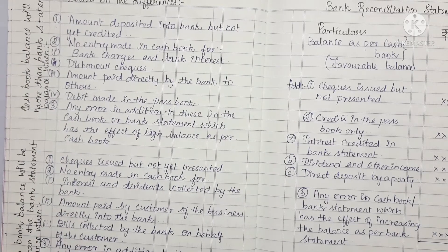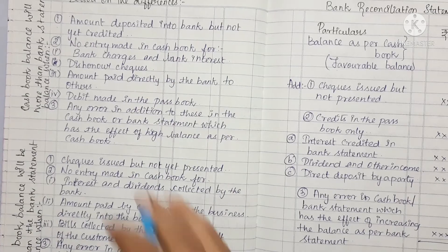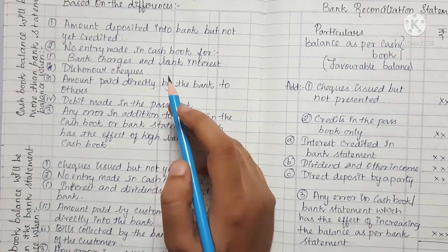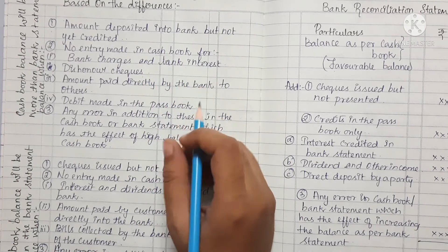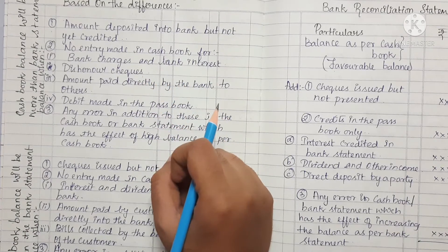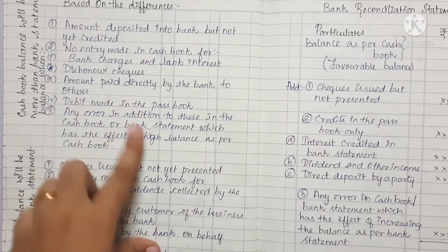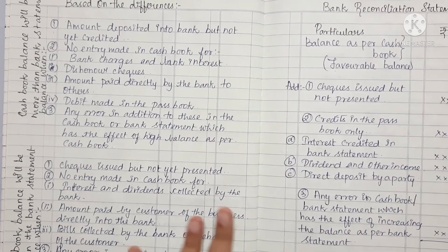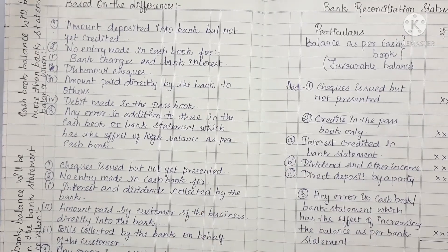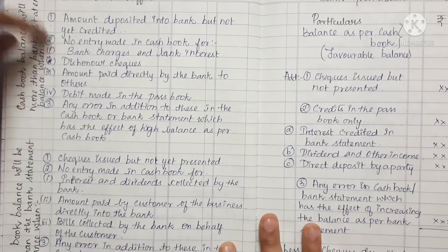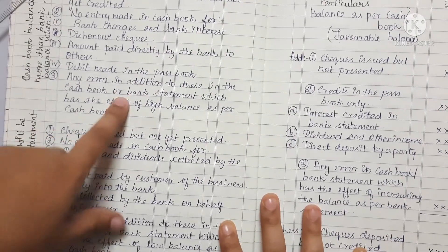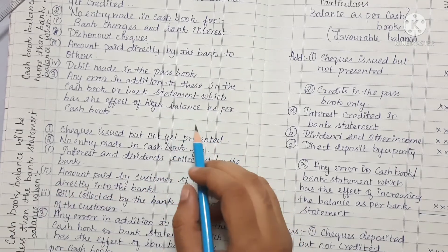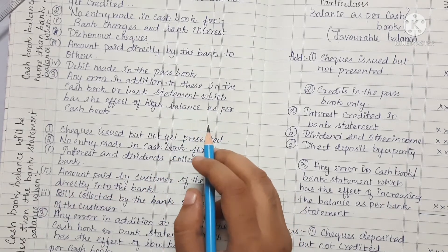Unless our bank statement intimates us, we will not know these charges. If you have any bank interest or bank charges, the bank informs us. If there is a direct amount debited by the bank, you can find it in the bank statement. Any errors in addition in the cash book or bank statement which have the effect of a higher balance as per cash book also apply.